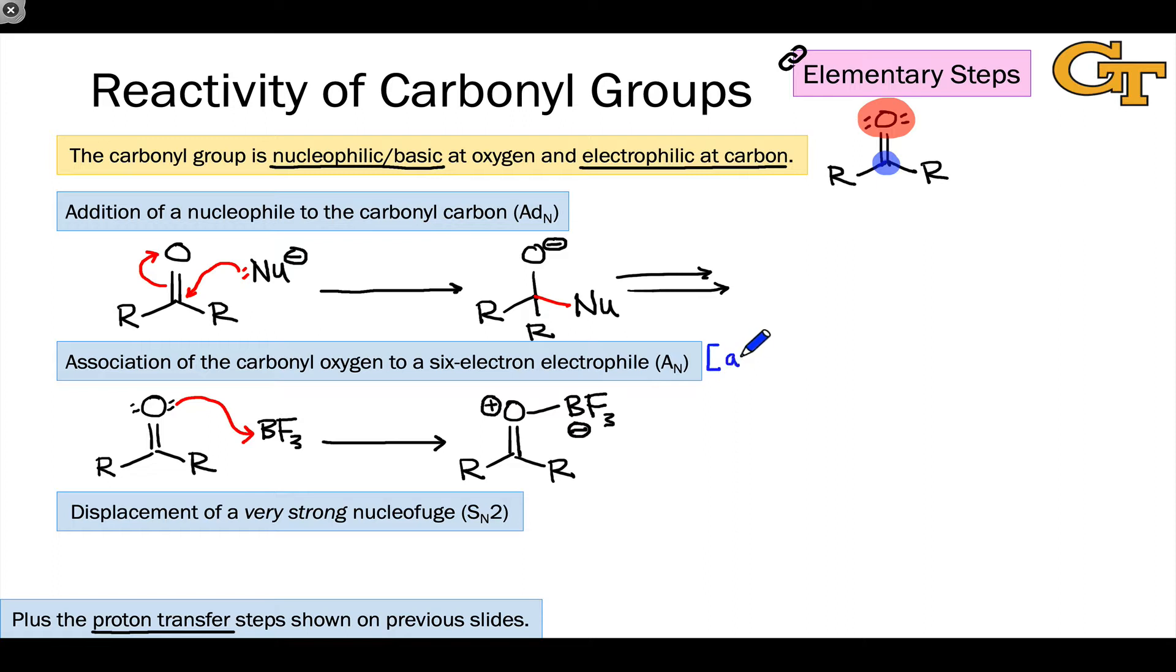One thing to note about this is that it's highly analogous to the protonation of the carbonyl group with a Bronsted acid. It's just that the Lewis acid in the example we see here is not hydrogen but boron.